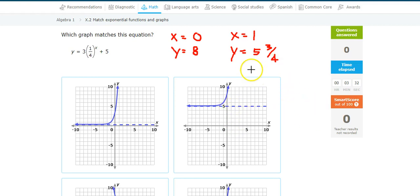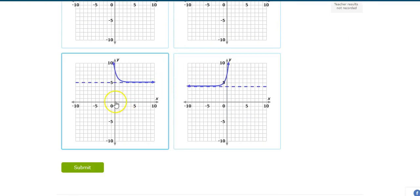Now I have to erase these so I can scroll down, but I'm looking for 0, 8, and 1 and 5 and 3 fourths. 0, 8, 1 and 5 thirds. 0, 8, 1 and 5 and 3 fourths. It's this one right here. This is the guy.